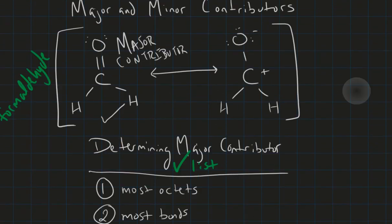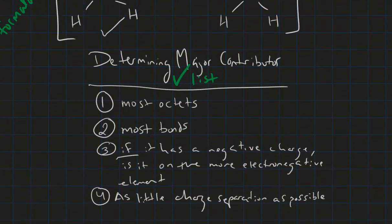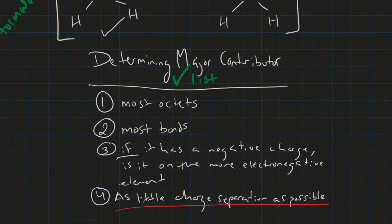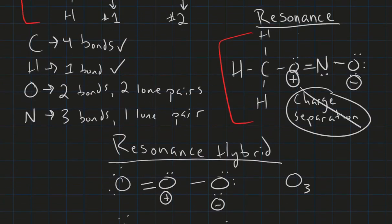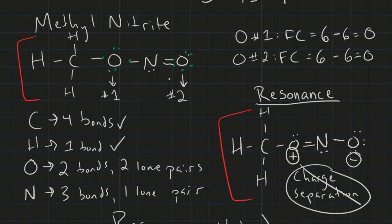And then our fourth step, remember, our fourth step down here is as little charge separation as possible because charge separation is bad. So we're going to go back up. And guess what? There is no charge here, but there is charge separation here. So this is going to be our major contributor.